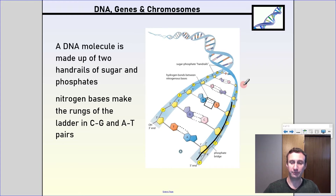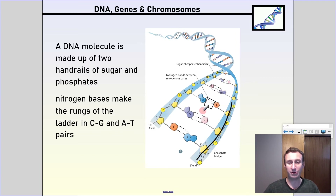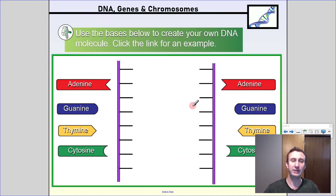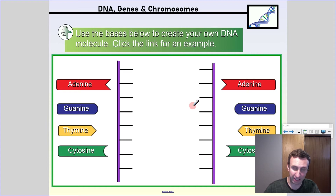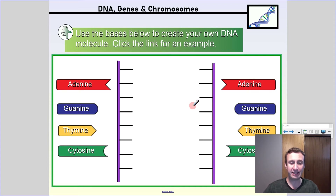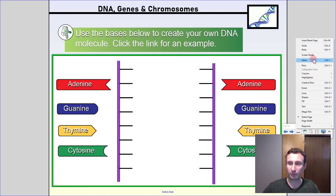The structure: sugar and phosphate on the side, and then in the middle the rungs have pairs of A-T or C-G. What does that stand for? A and T is adenine and thymine — those are the names of the nitrogen bases. And then C and G is cytosine and guanine.